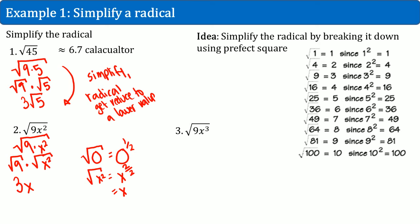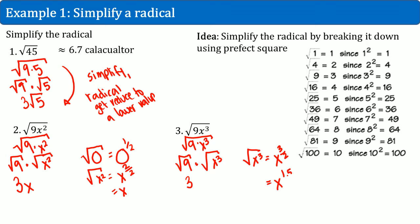What about example 3? Same thing — 9 times x cubed. We split it apart: square root of 9 times square root of x cubed. We know square root of 9 became 3. But for x cubed, that means x to the 3 over 2. Three over two doesn't simplify to a whole number. We can't simplify that further, so we leave it as the square root of x cubed. You can't break the number down anymore, so the final answer is 3 times the square root of x cubed.